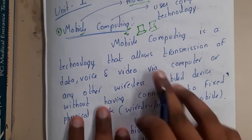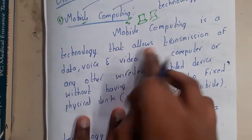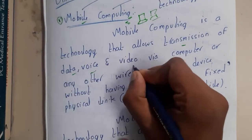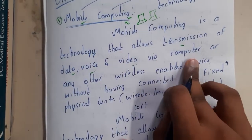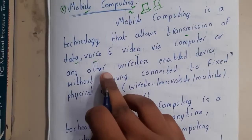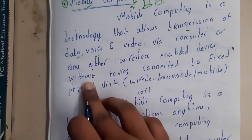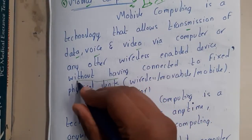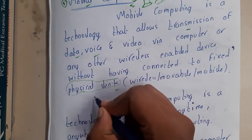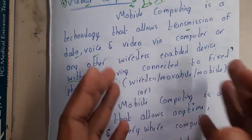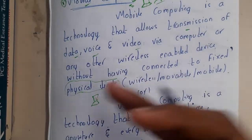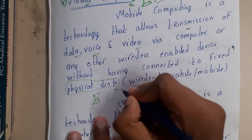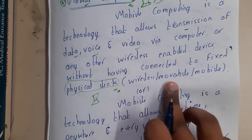A common book definition: mobile computing is a technology that allows transmission of data, voice, and video via a computer or any other wireless-enabled device without having to be connected to a physical link. We are talking about the physical link because we want the device to be movable — if a cable is attached, you cannot move from one place to another. That is why it is wireless.